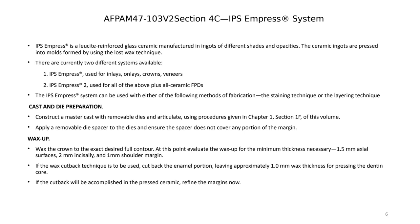We can use EMAX to do monolithic restorations, or use it to design and fabricate a substructure with layering porcelain. When talking about monolithic, we can do a full wax-up and press the material to have a full crown made from one material. For a coping approach, we press the coping in all ceramics and then use a compatible layering porcelain developed by the company to finish the crown.